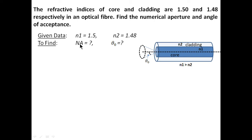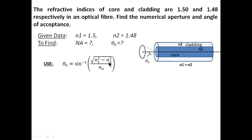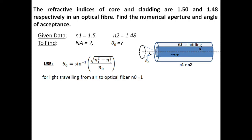The surrounding medium is not given in the question, so we assume N0 is air, meaning N0 = 1. For light traveling from air to optical fiber, N0 = 1, so the equation reduces to theta-naught = sin⁻¹(√(N1² - N2²)). Substituting the values, theta-naught = sin⁻¹(√(1.5² - 1.48²)). Make sure your calculator is in degree mode. You will get theta-naught = 14.1 degrees.